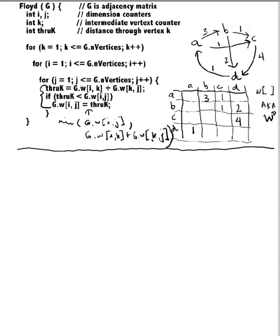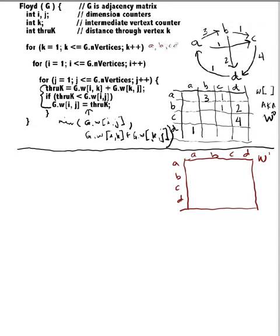Let's go ahead and start to execute this on this picture. I will be building W1 on top of the existing matrix. I'll start it here — W1 with columns A, B, C, D. K steps one through the number of vertices, I steps one through the number of vertices, and J goes one through the number of vertices. I'm going to use A, B, C, D rather than 1, 2, 3, 4 to make life easier.